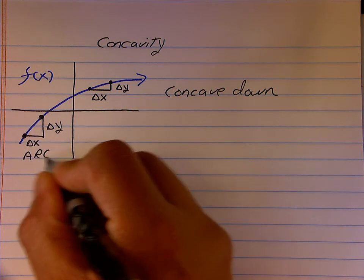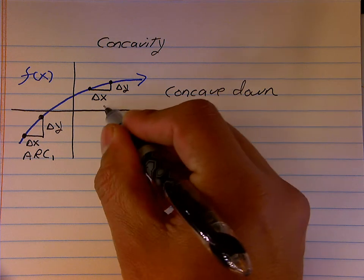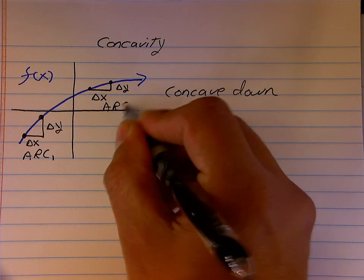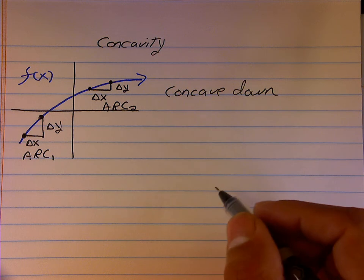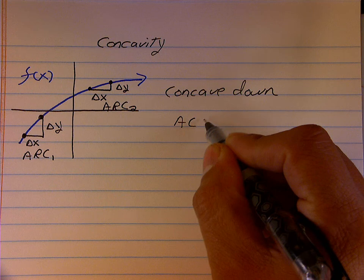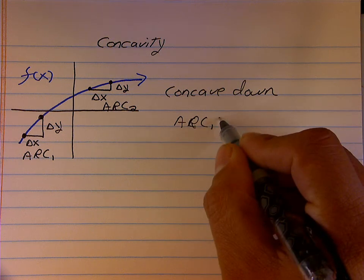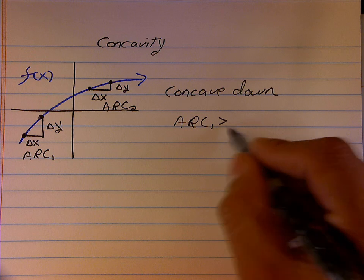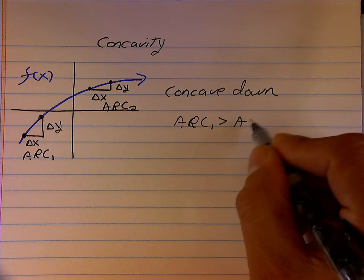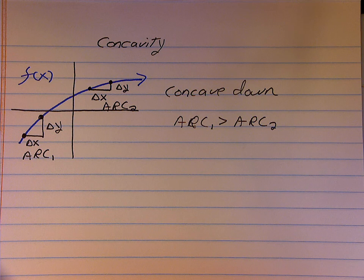I have an average rate of change here — I'll call this average rate of change 1 — and an average rate of change here. As I move from left to right, my average rate of change is bigger on the left than it is on the right. We can describe this situation as concave down.